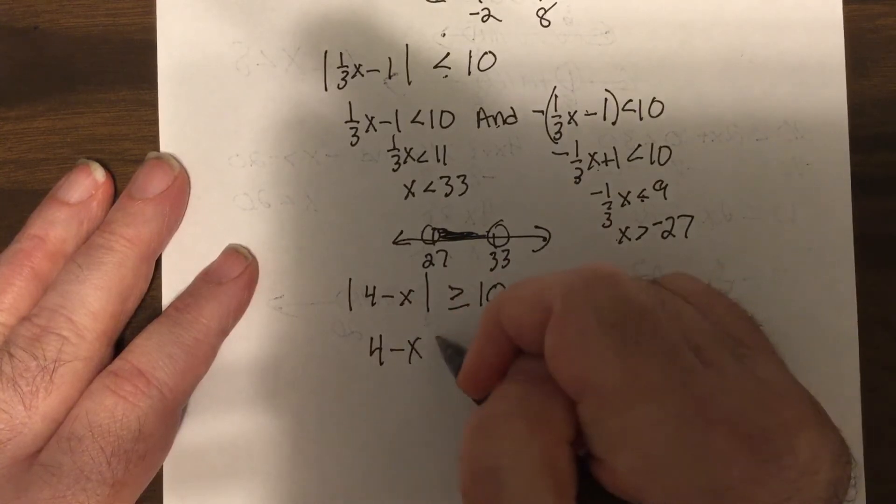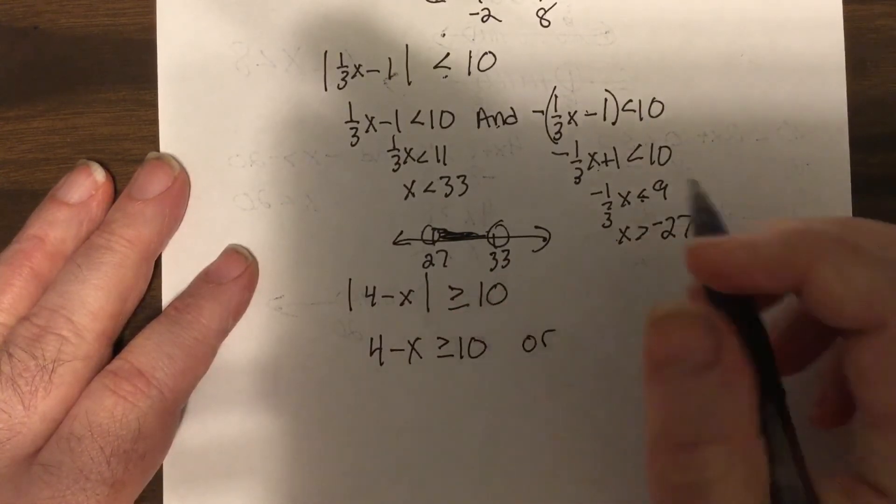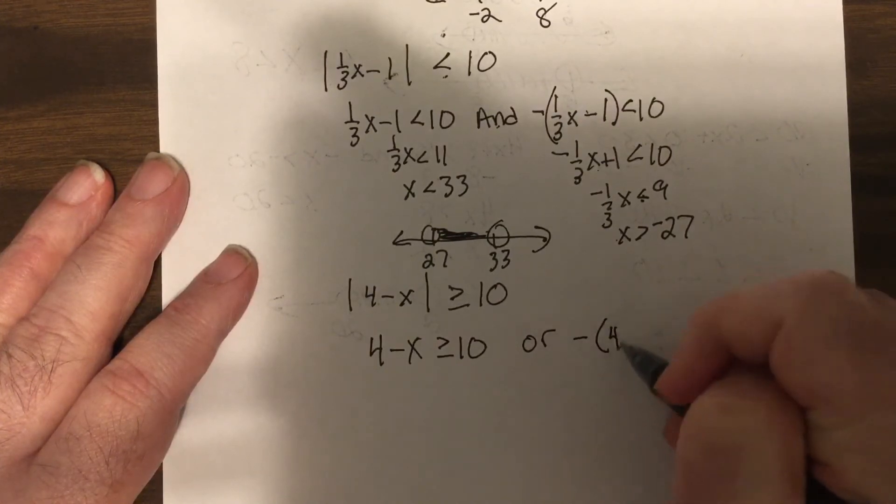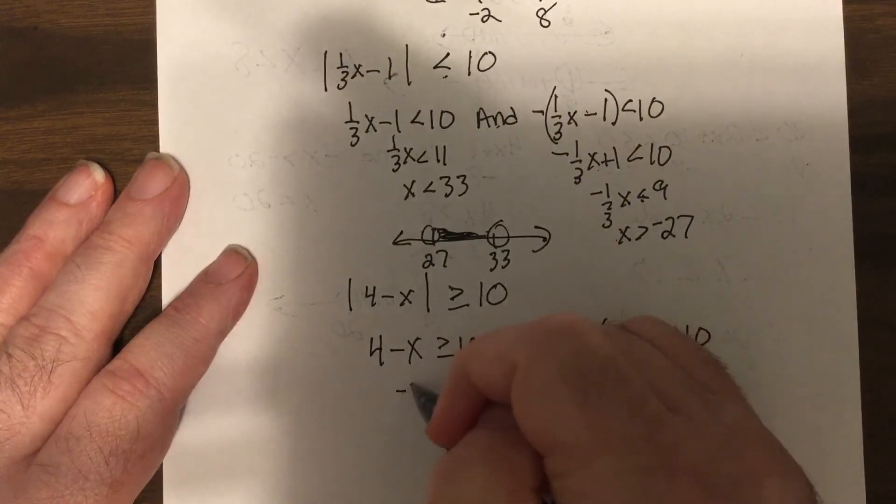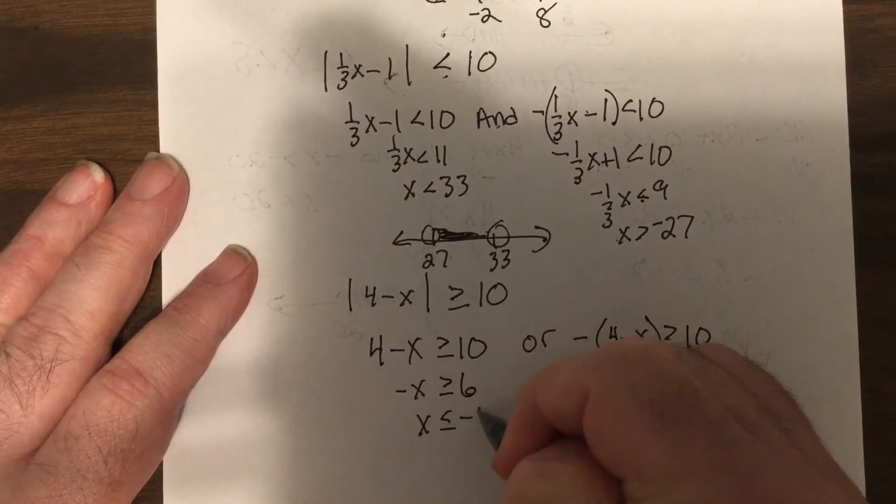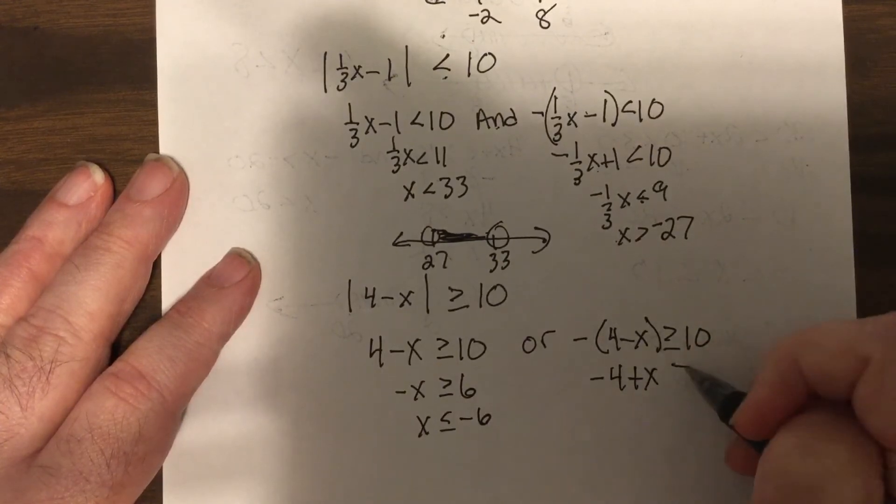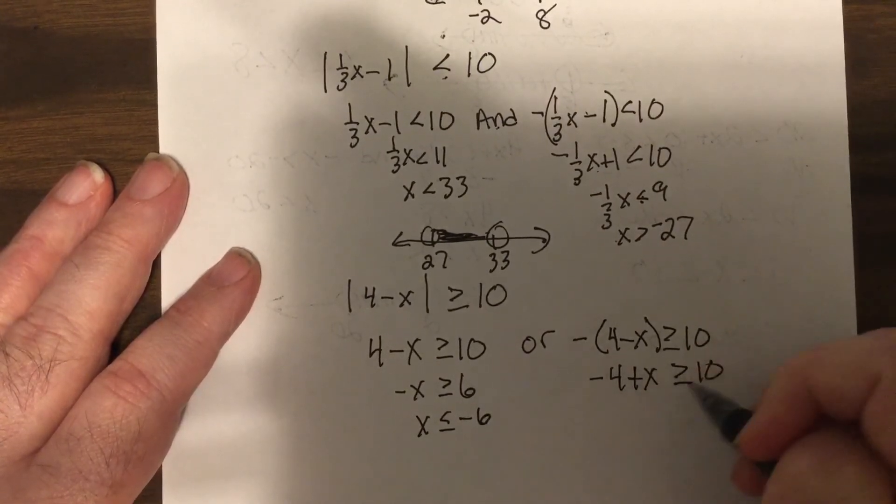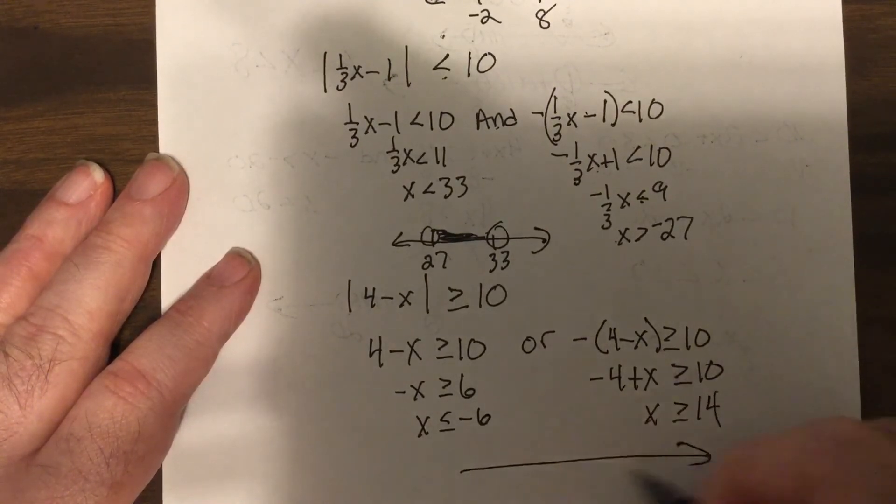So here we have 4 minus x is greater than or equal to 10, or it's greater than, so it's 'or'. The opposite—so we would subtract 4. Take the opposite. Here we take the opposite, add 4. So it would be less than or equal to negative 6.